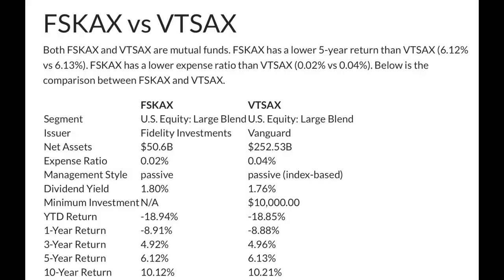Now let's take a look at the differences in how they've performed. Looking at five-year returns, we see that VTSAX has beaten FSKAX by a little bit — 6.13% compared to 6.12%. FSKAX does have a lower expense ratio though. They're both passively managed index funds that track their respective indexes.